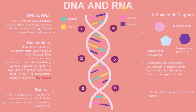In DNA the bases are adenine, guanine, cytosine, or thymine, whereas in RNA thymine is replaced by uracil. The bases are usually referred to by their first letters: A, G, C, T, and U.